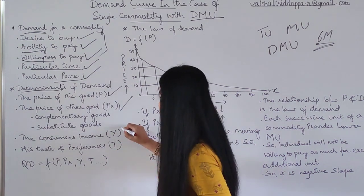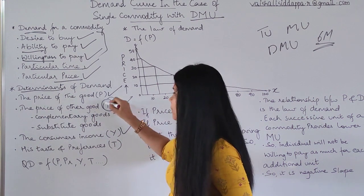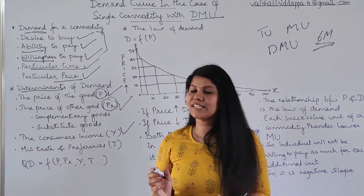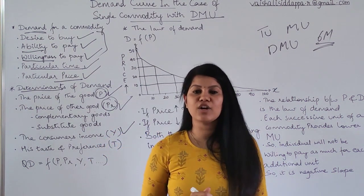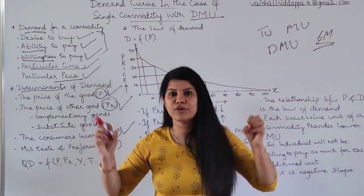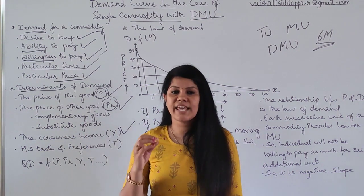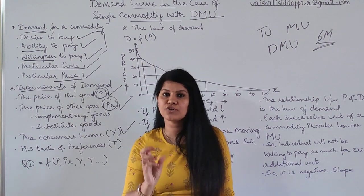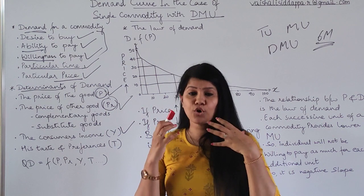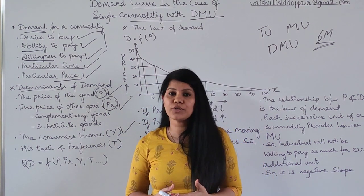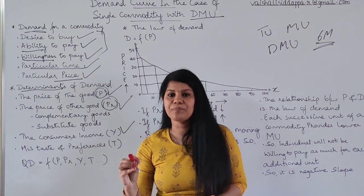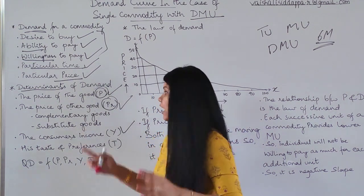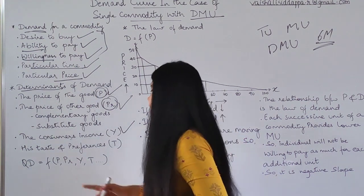The price of related goods is represented by Pr. The third determinant is the consumer's income. How much money you have determines your consumption. If your income is high, your consumption rate is high and you'll demand more luxurious goods. If your income is low, you'll stick to basic needs. Consumer income is represented by Y — we use Y instead of I because I is used for investment in economics.